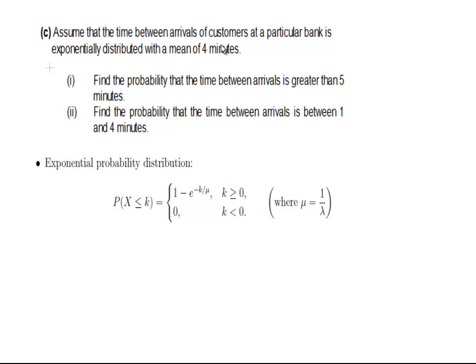Assume that the time between arrivals of customers at a particular bank is exponentially distributed with a mean of 4 minutes. Before we actually look at the questions, let's just think about what we're told.